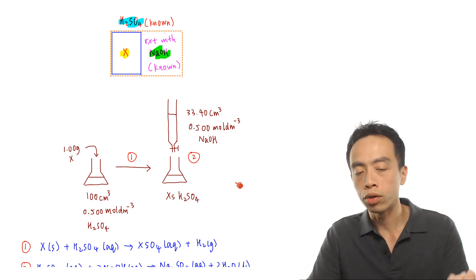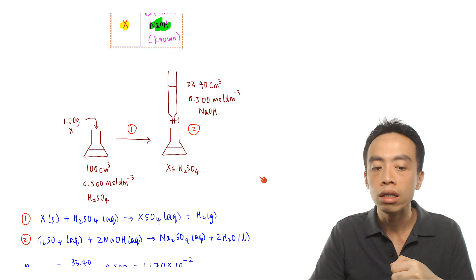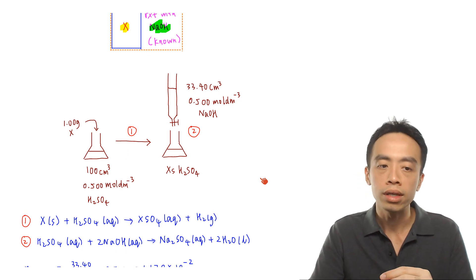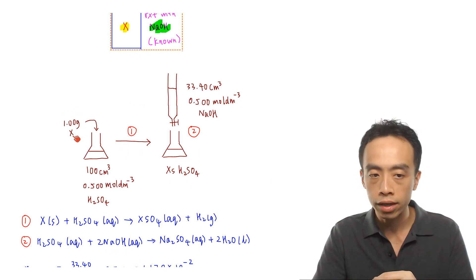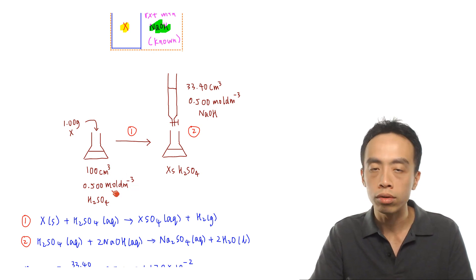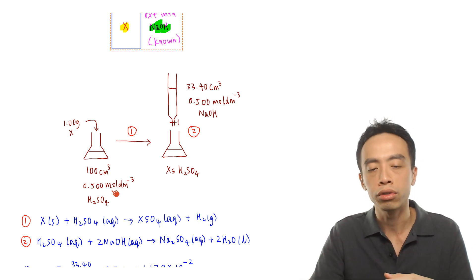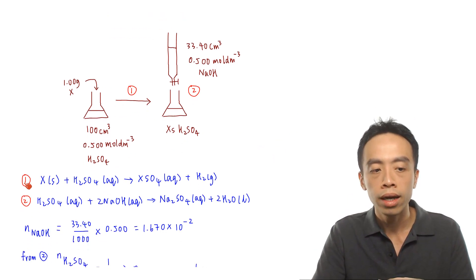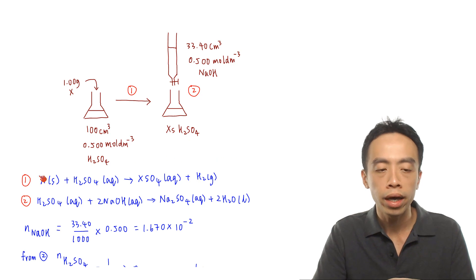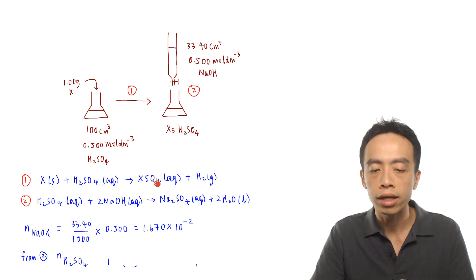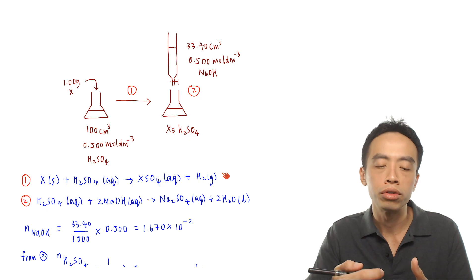Looking at the diagram, we are adding 1.00 g of X into 100 cm³ of 0.5 mol per dm³ H₂SO₄. There is a reaction — reaction one — and the balanced equation is: X + H₂SO₄ → XSO₄ + H₂ (hydrogen gas).